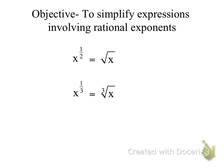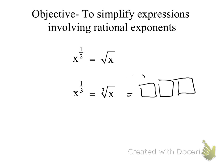I write that by putting a little 3 in the middle. What does that really mean? It means what number times itself three times will equal that x inside. That's what we mean by a cube root. When I have x to the one-fourth power, that means what is the fourth root of x?